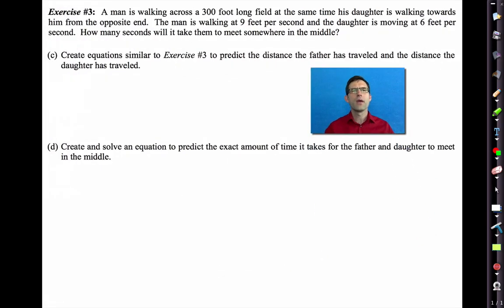Let's keep going on this problem. So I've recopied the problem at the top of the page. Often I'll do this because although you might have the worksheet sitting in front of you, I can't get it all on the screen. Just kind of travel with me along this journey. Letter C says create equations similar to exercise three to predict the distance the father has traveled and the distance the daughter has traveled. So this is going to be very simple. We want one equation for the father and we want one equation for the daughter. Now keep in mind there are equations here. We want an equal sign. We want the equality of two things. So for the father, this is going to be simple. The distance he's traveled will be the rate nine times the amount of time, t.